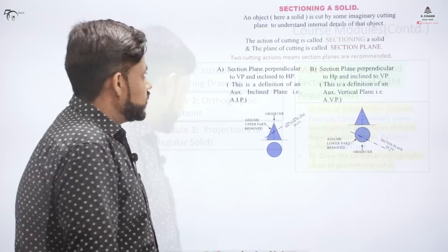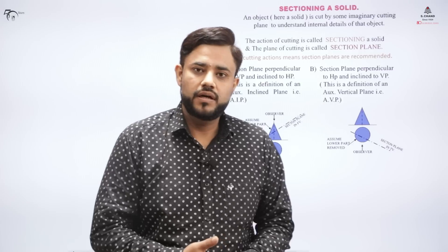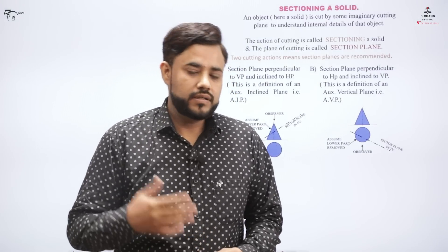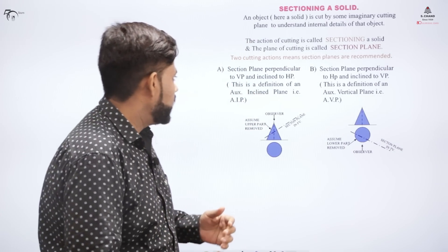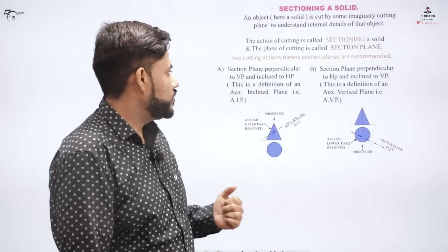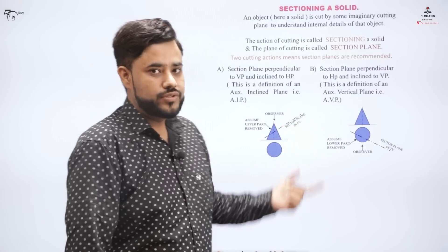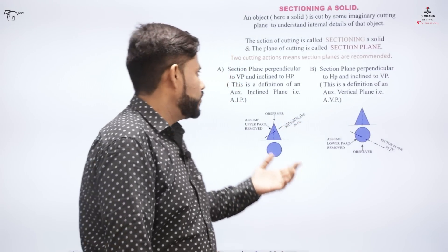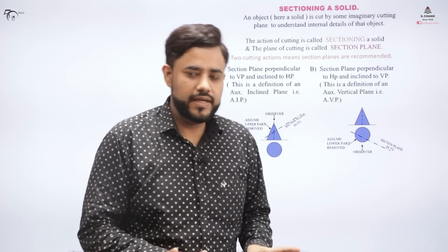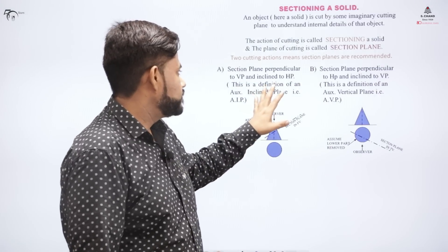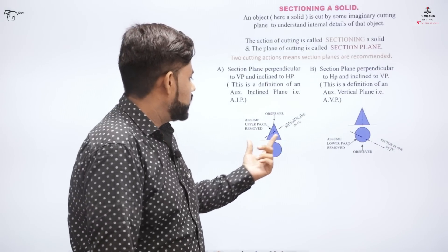The first thing to understand is what we mean by a section of a solid. Let's say we have a solid — a prism or pyramid — and we cut that solid with a plane. That plane can be inclined to the horizontal plane (HP) or inclined to the vertical plane (VP). If the inclination is given with the horizontal plane, you have to cut the front view part of the object.